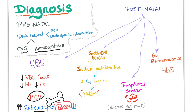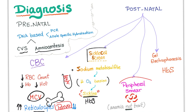You can do a sickle cell screen by adding sodium metabisulfite, which will decrease the oxygen tension, forcing the cells to sickle if there is hemoglobin S. When the cell sickles, the test tube becomes very turbid — it's not clear. Third, you can use a peripheral smear or blood film. When you look under the microscope, you will see sickle cells. Sickle cells are only seen in sickle cell anemia, but not in sickle cell trait.